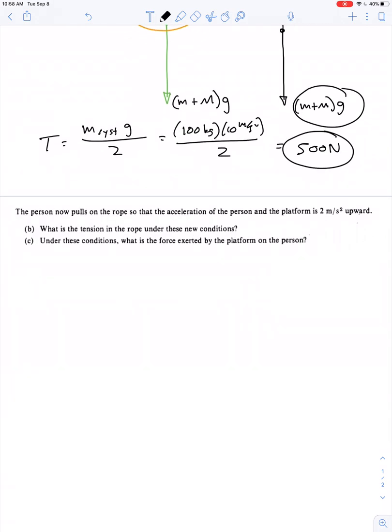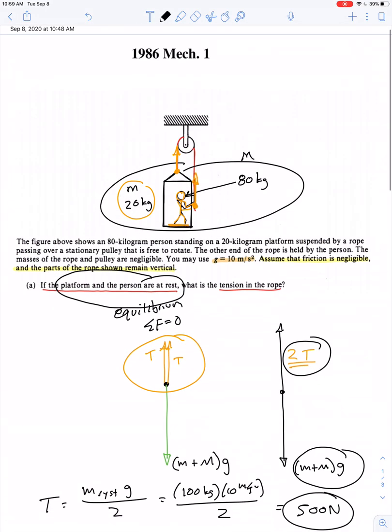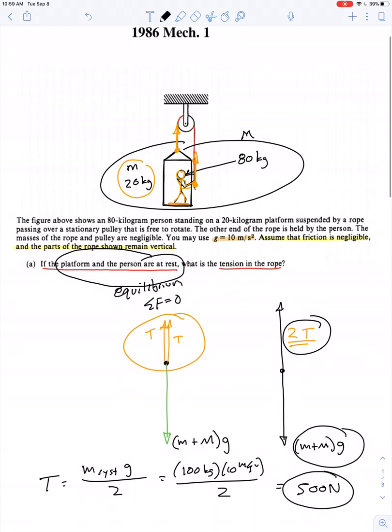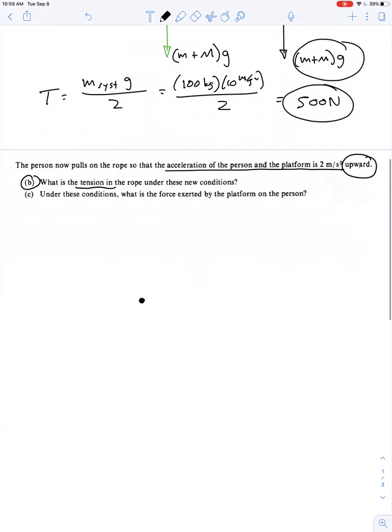Now the person pulls on the rope so that the acceleration of the person and the platform is 2 meters per second upward. What's the tension in the rope under these new conditions? So how about once again we choose to make a free body diagram for the whole system? So whether he's at rest or accelerating, it doesn't change the fact that the tension in the rope is applied in two locations. So we have basically the same free body diagram with a slight difference.